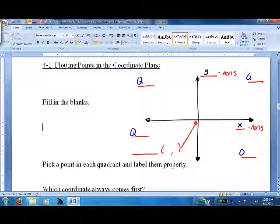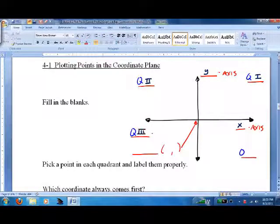The quadrants are called by Roman letters. This is the first quadrant, this is the second quadrant, this is the third quadrant, and this is the fourth quadrant.